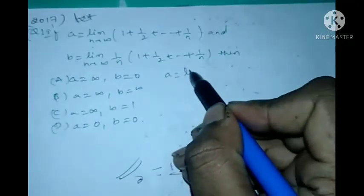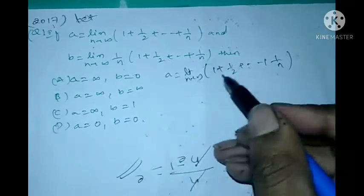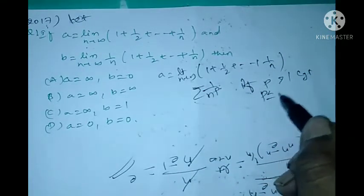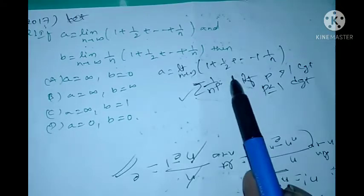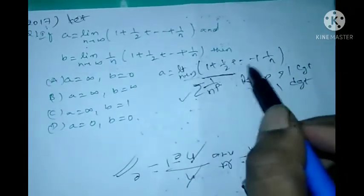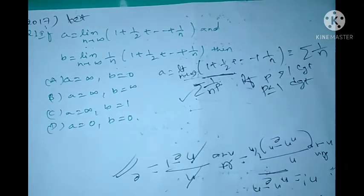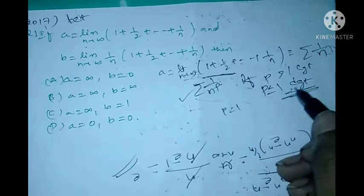We know that e = lim (n→∞) of (1 + 1/2 + … + 1/n) by the standard result. Also, by the p-series result: summation of 1/n^p is convergent if p > 1, and divergent if p ≤ 1. Here the series is summation of 1/n, so p = 1, therefore the direct answer is divergent — that is, A = infinity.